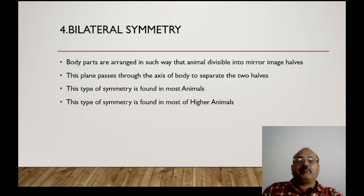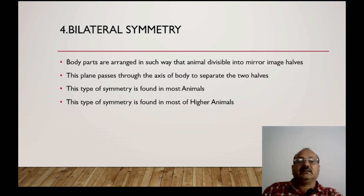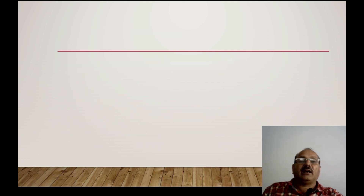Then bilateral symmetry — the body parts are arranged in such a way that the animal is related to mirror images, or halves. These planes pass through the axis of the body to separate the two halves. This type of symmetry is found in most animals, particularly higher animals. So these are the types of symmetry which divide the animal into different parts.